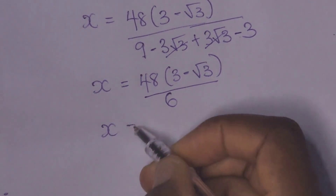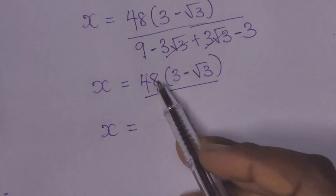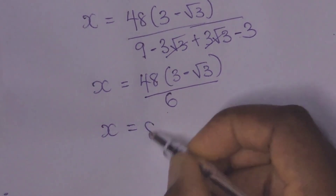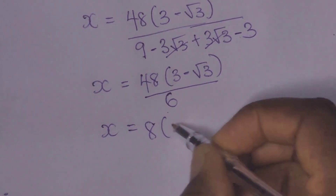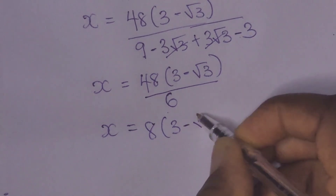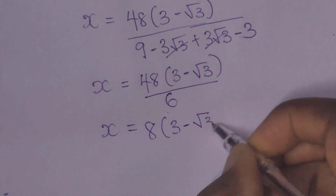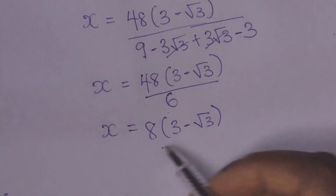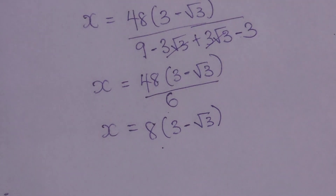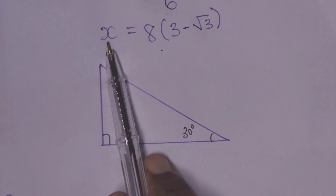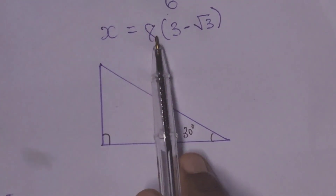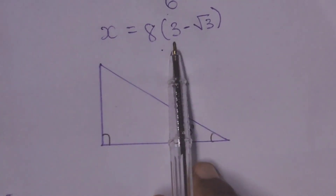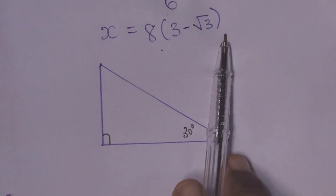So our x is equal to 48 divided by 6, which is 8, times (3 minus root 3). So this is our value for x. But we are yet to get the area, remember. We have gotten our x to be 8 times (3 minus root 3).